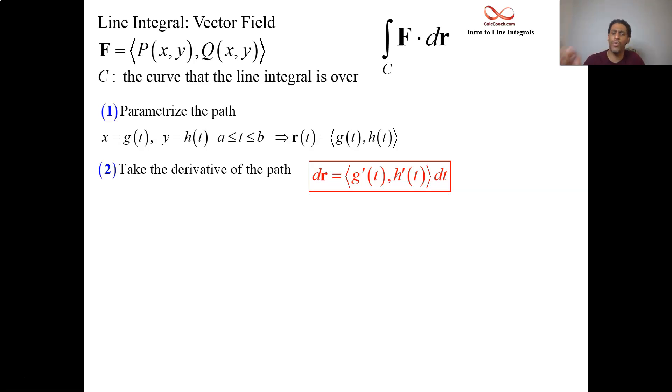F is going to be this vector function full of multivariable scalar functions. When we have our parametrization, we can now rip out all the x's and put in g(t), rip out all the y's and put in h(t). We're rewriting F, we're restricting F to be only on the curve.